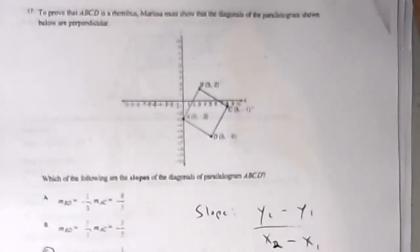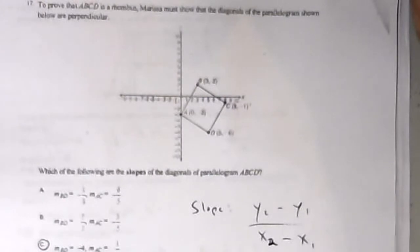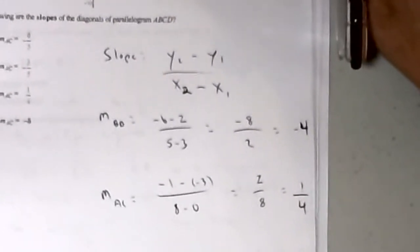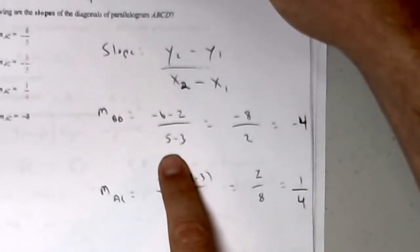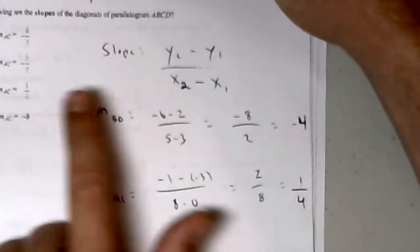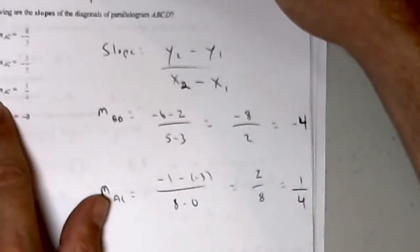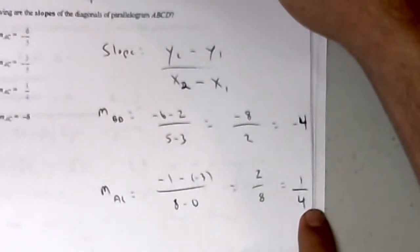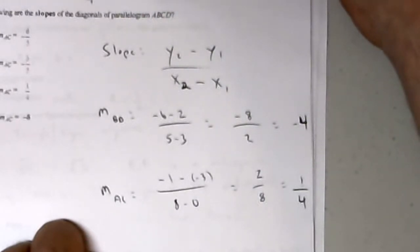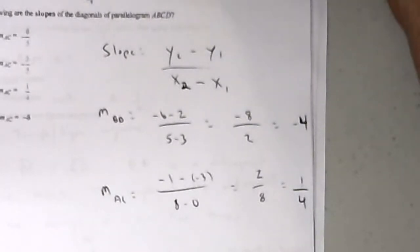To prove ABCD is a rhombus, Marissa must show the diagonals of the parallelogram are perpendicular. The slope of diagonal BD is y2 minus y1 over x2 minus x1: negative 6 minus 2 over 5 minus 3 is negative 8 over 2, which is negative 4. Once I get that, I'd choose that answer and move on on a test. Diagonal AC will similarly have slope one-fourth, which is the opposite reciprocal of negative 4. That's what makes the diagonals perpendicular — the slopes are opposite reciprocals of each other.